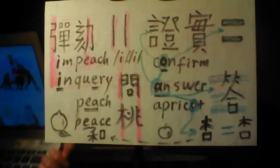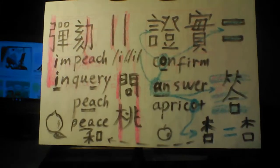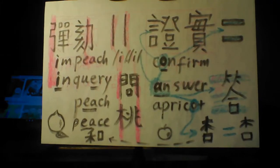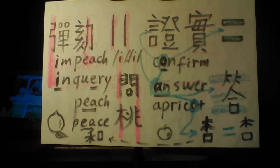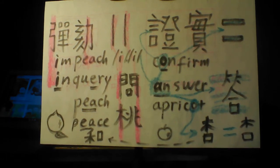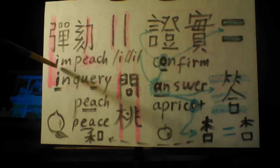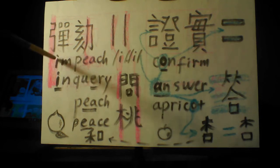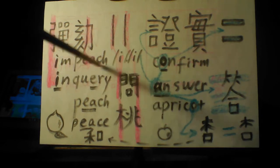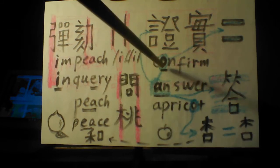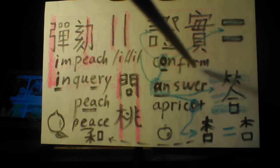So we go to this Chinese character. Impeach versus confirm. The trick is here. It's on the front wall. Im versus O. Confirm.